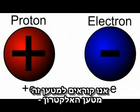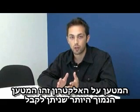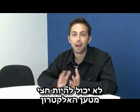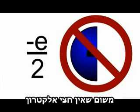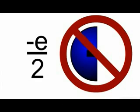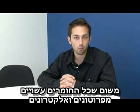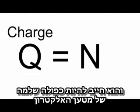We call this amount of charge the electron charge, and we give it the symbol E. The charge on the electron is the smallest amount of charge you can have. You can't have half an electron worth of charge, because you can't have half an electron. Also, you can only have multiples of this amount of charge, since all objects are made up of protons and electrons. Charge is given the symbol Q, and it must always be a multiple N of the electron charge.